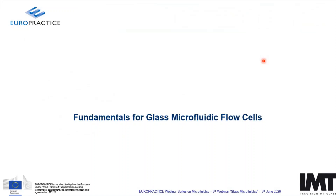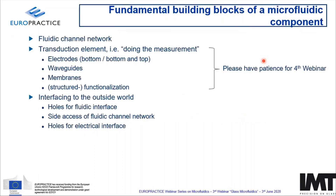When talking about the fundamentals of microfluidic flow cells, there are three fundamental things. First, creating a channel network where your fluids are going to flow through. Second, you need a transduction element — meaning what is doing the measurement. That could be, for example, integrating electrodes within the microfluidic network, waveguides, actuative membranes, or even functionalization in terms of immobilization chemistry to capture your analyte. And finally, you need the interfacing to the outside world — providing optical access, holes for fluid interfacing, side access for the fluid channel networks, or holes for electrical interfacing with integrated electrodes.